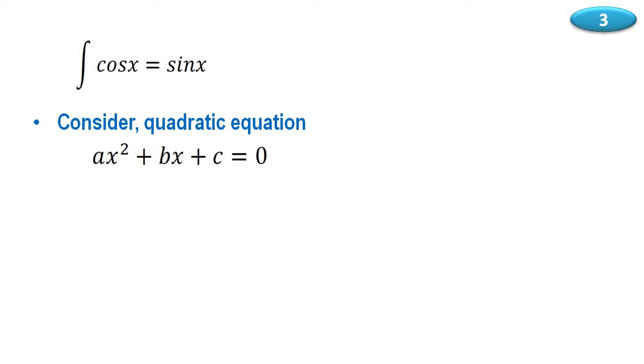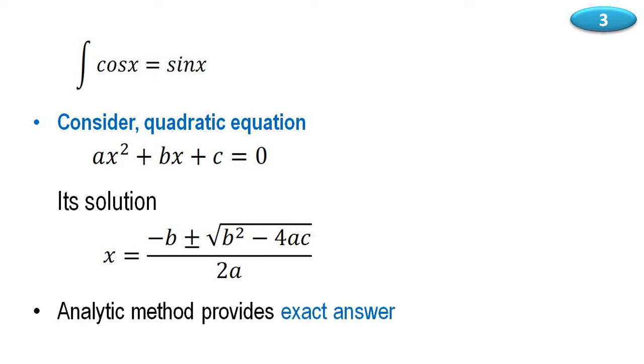Consider a quadratic equation: x square plus b x plus c equal to 0. We know the solution of this equation, that is x equal to minus b plus or minus root of b square minus 4ac by 2a. So in all these cases, analytical method provides exact correct answer. By using analytical method we will get exact answer.